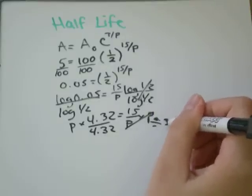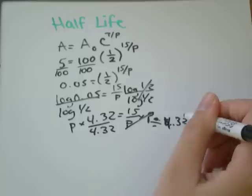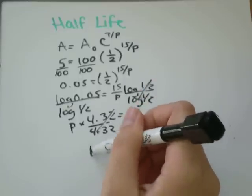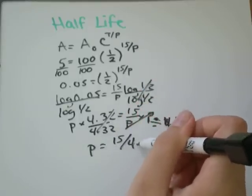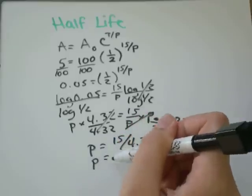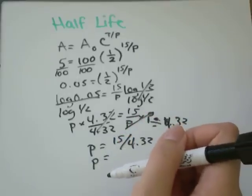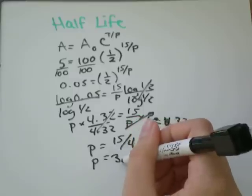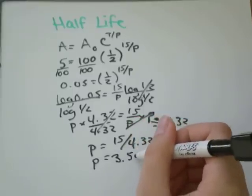That's not a divide sign. 4.32. And those will cancel out, and I'll get p equals 15 over 4.32. 15 divided by 4.32 is 3.5 years.